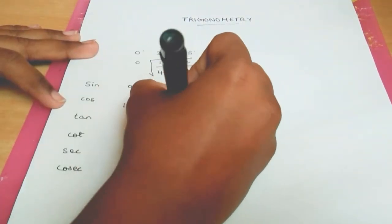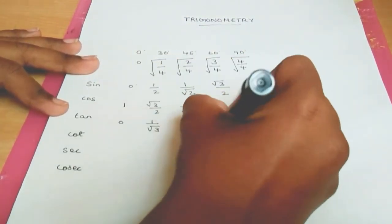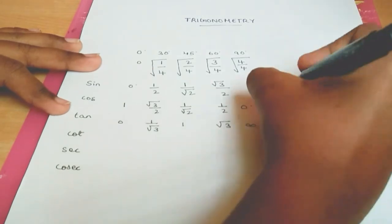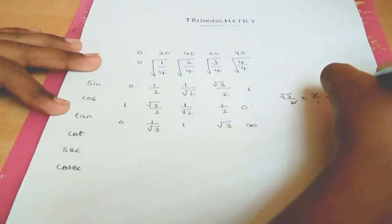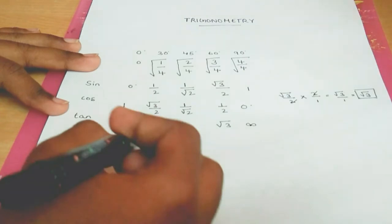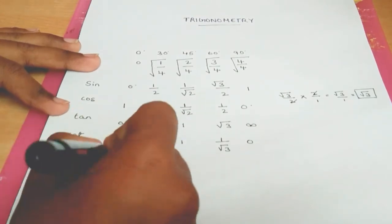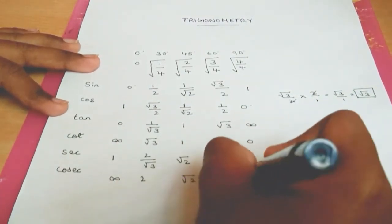The reverse of sine values are cosine values. We get tan values by dividing sine by cos. The reverse of tan is cot, the fraction reverse of cos is secant, and reverse of secant is cosecant. We are done.